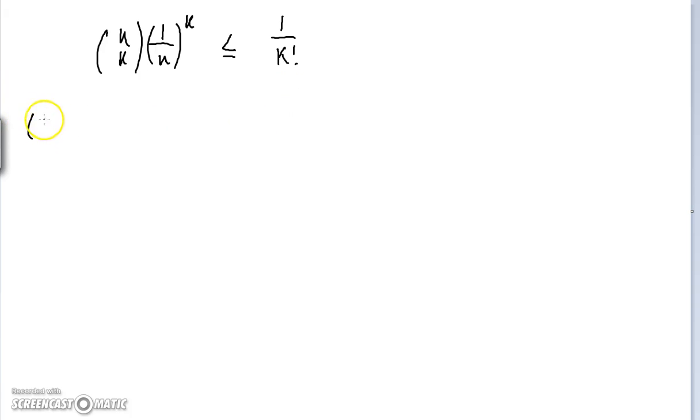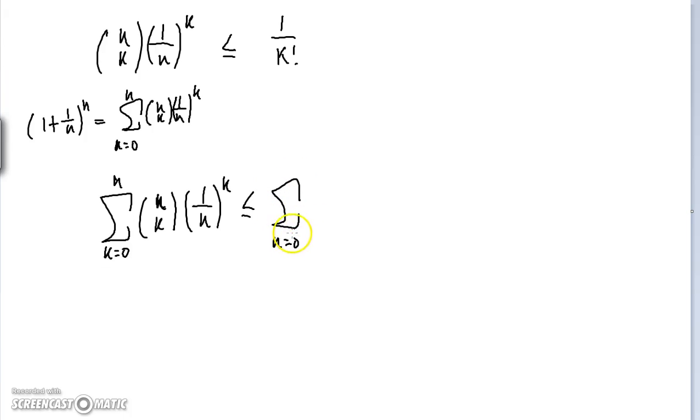We've seen that N choose K times 1 over N to the power of K is less than or equal to 1 over K factorial. Remember, earlier we showed that 1 plus 1 over N to the power of N is equal to the sum of N choose K, 1 over N to the power of K, from K equals 0 to N. If this top inequality is true, then the sum from K equals 0 to N of N choose K is less than or equal to the sum from K equals 0 to N of 1 over K factorial.